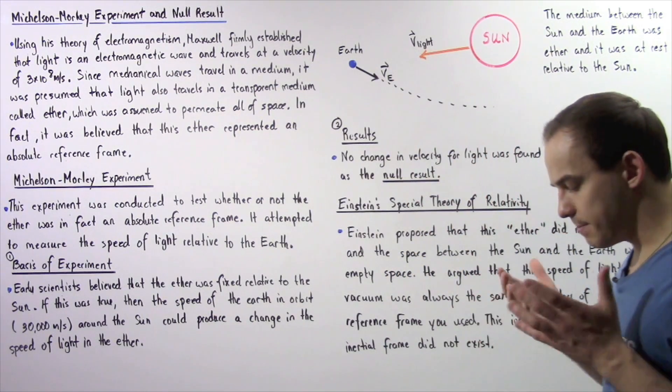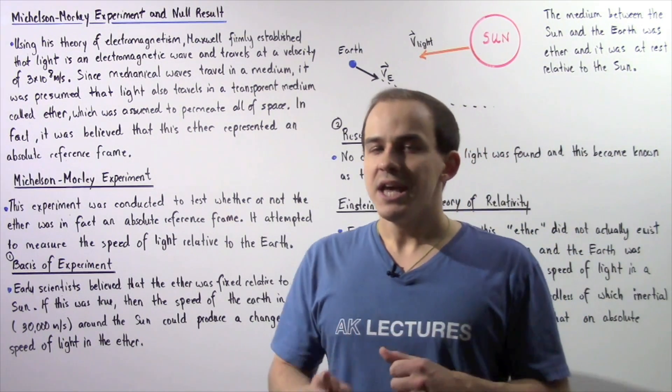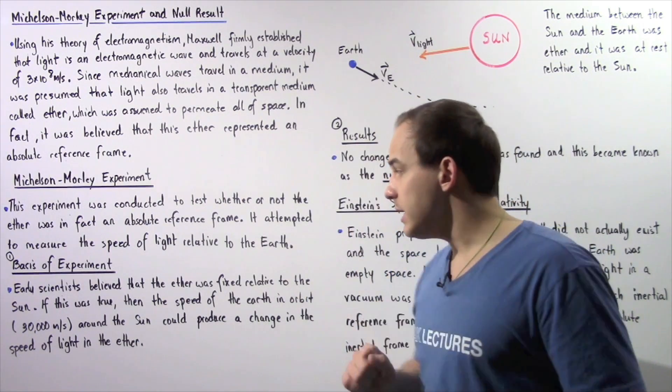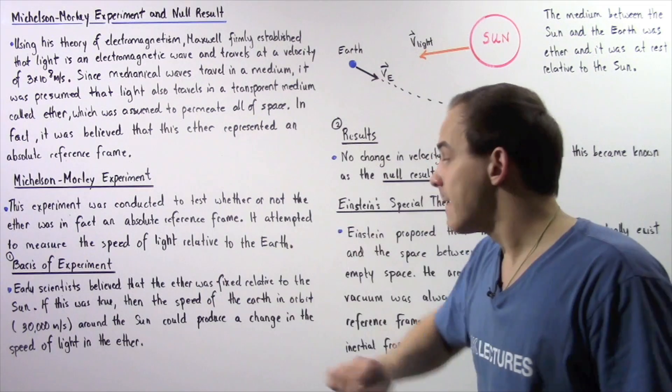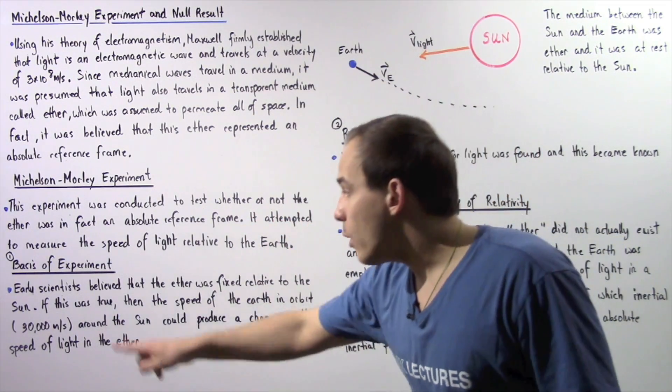Now, what exactly was the basis of this experiment? Early scientists believed that the ether was fixed, it was at rest relative to the sun.